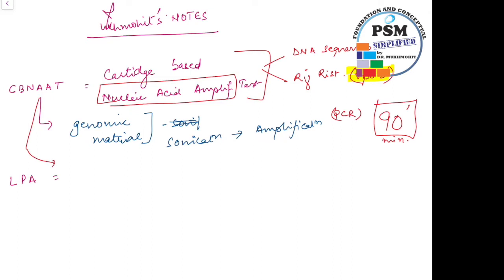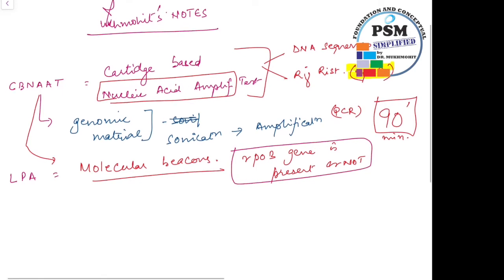The second way by which CBNAT works is using something called molecular beacons. So molecular beacons are used which are like the RPOB gene, that is the resistance for rifampicin gene. So in real time they can find out if this RPOB gene is present or not. So primarily the use of CBNAT is in telling about the rifampicin resistance and the presence of the bacteria or the bacilli.